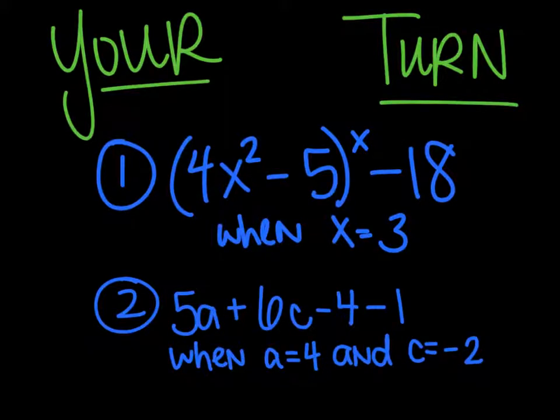Your turn. Two problems here for you. The first one is a little bit trickier than the second one. But 4x squared minus 5 in parentheses to the x power, and then minus 18 when x is 3. And 5a plus 10c minus 4 minus 1 when a is 4 and c is negative 2. Go ahead and solve these. And then turn the video back on when you're done.